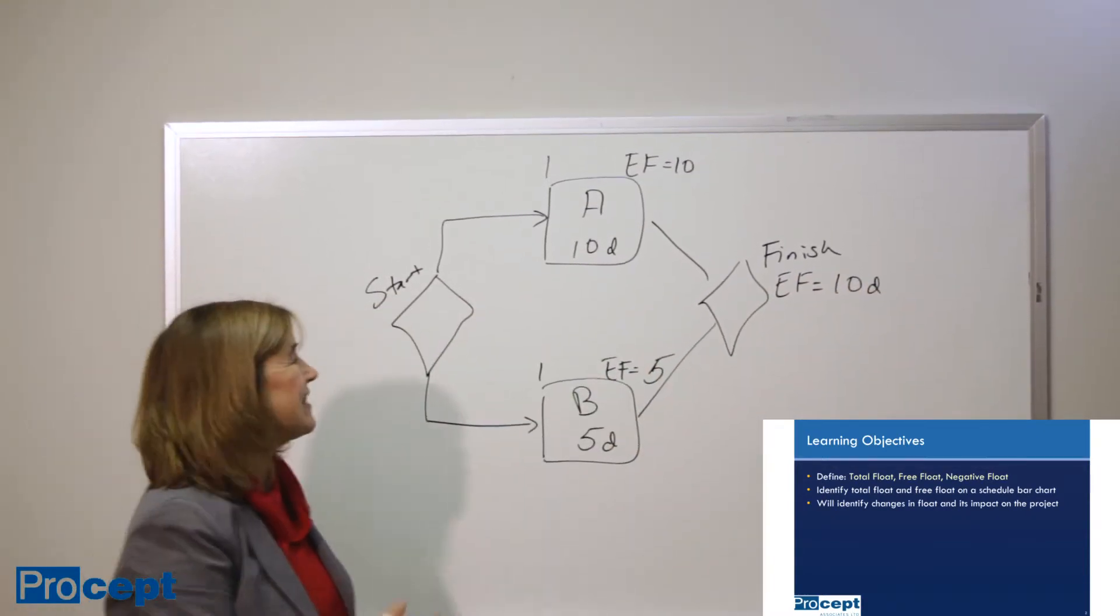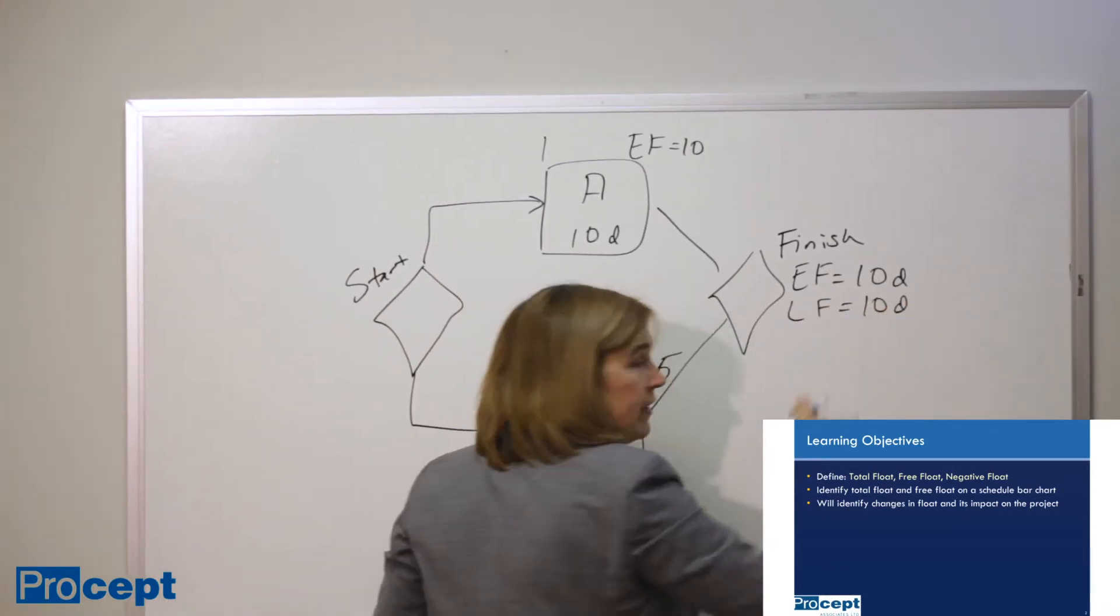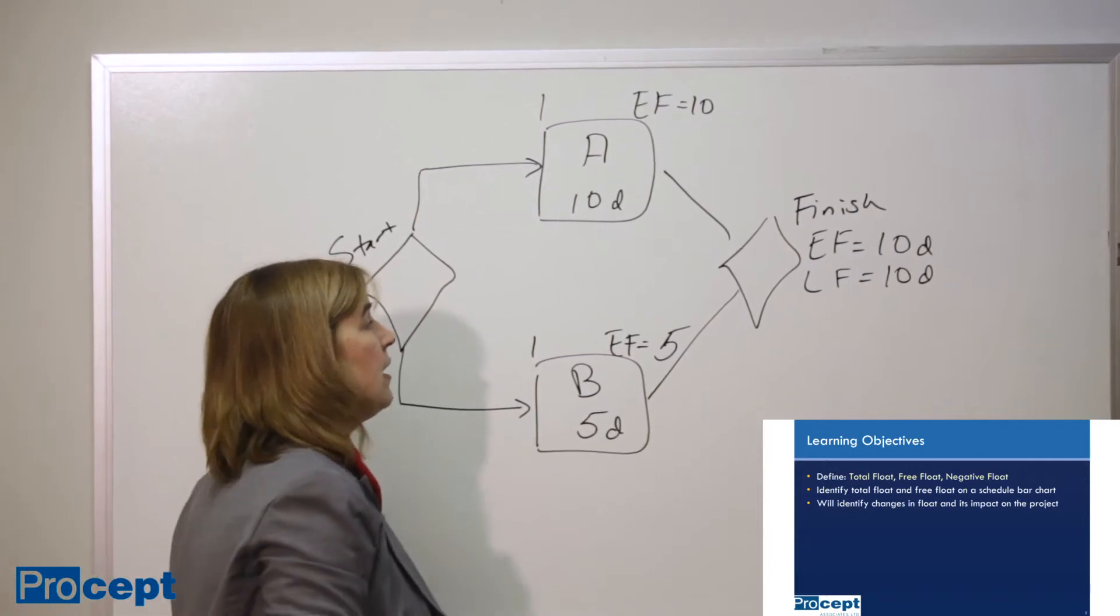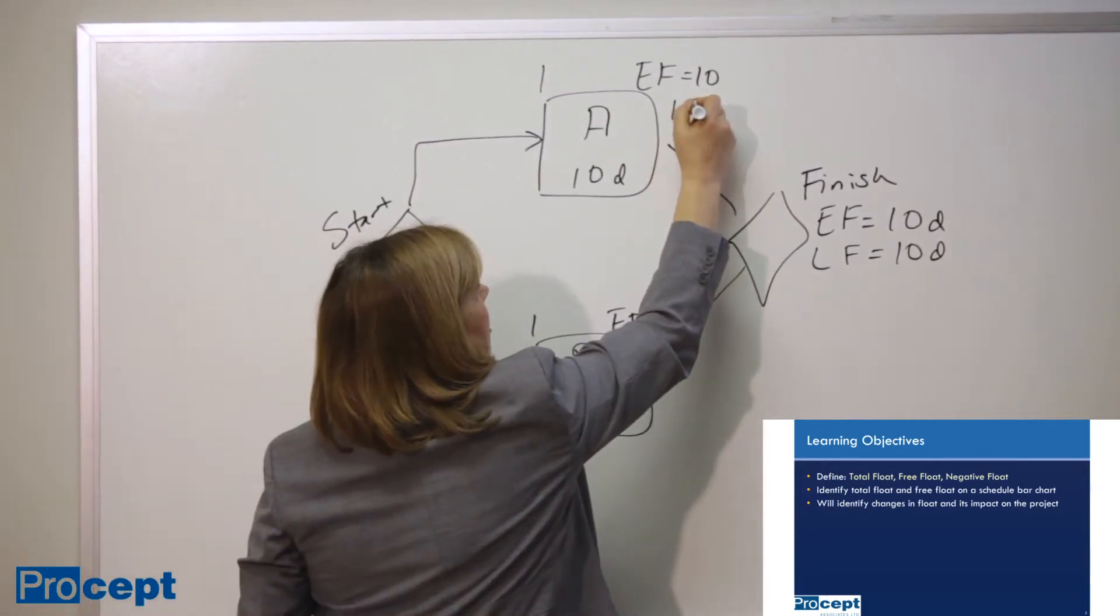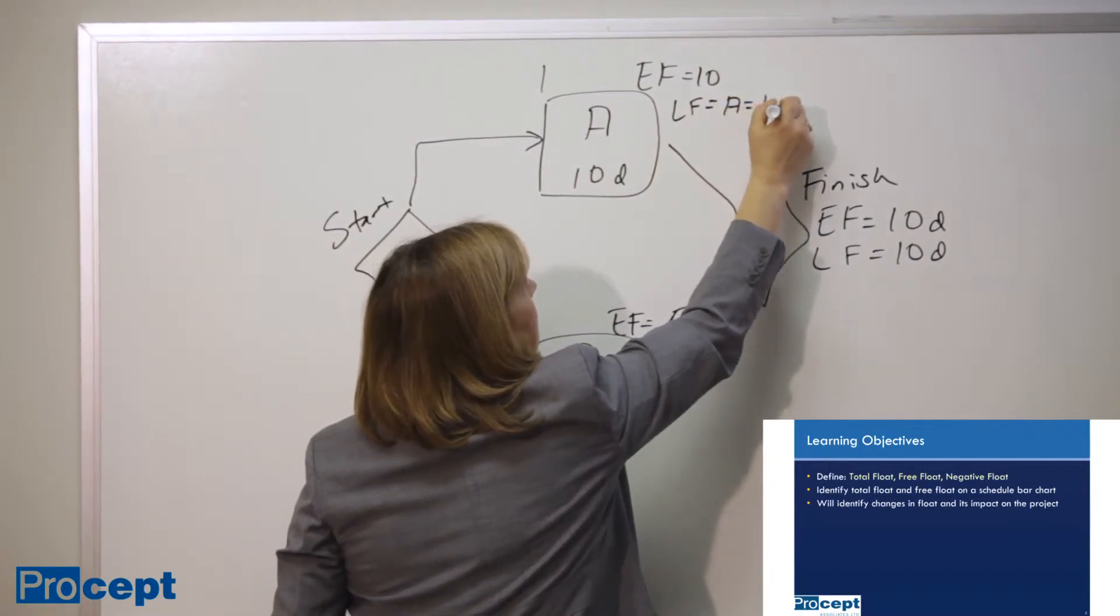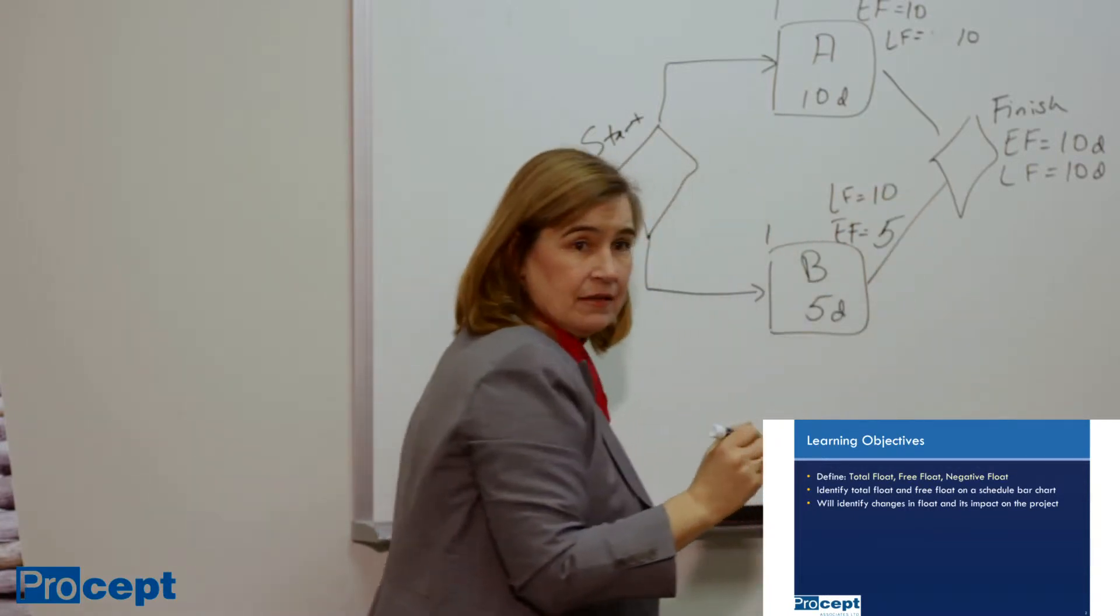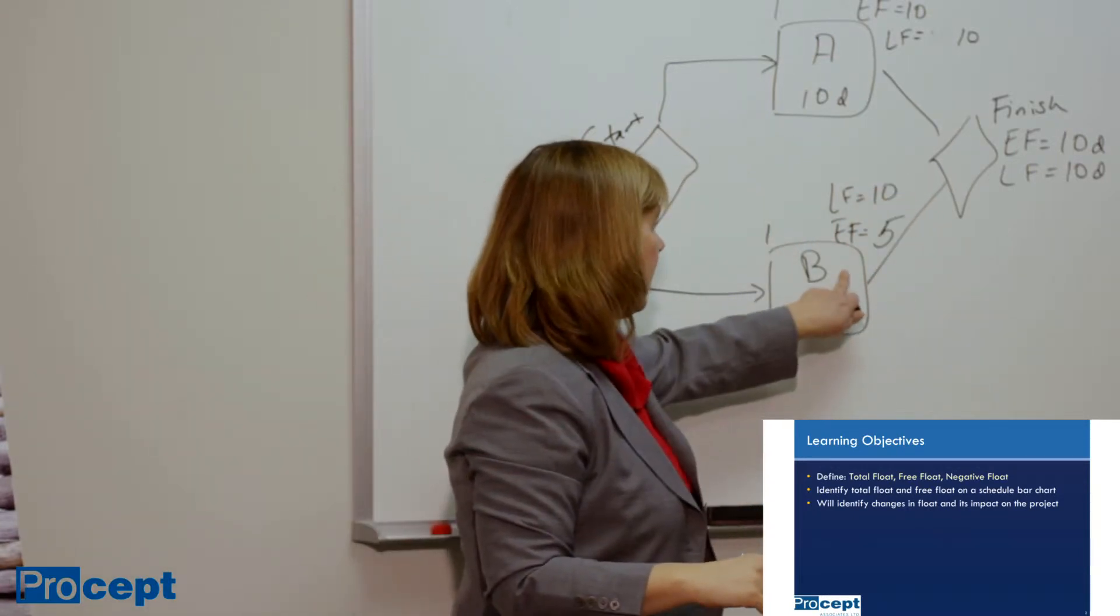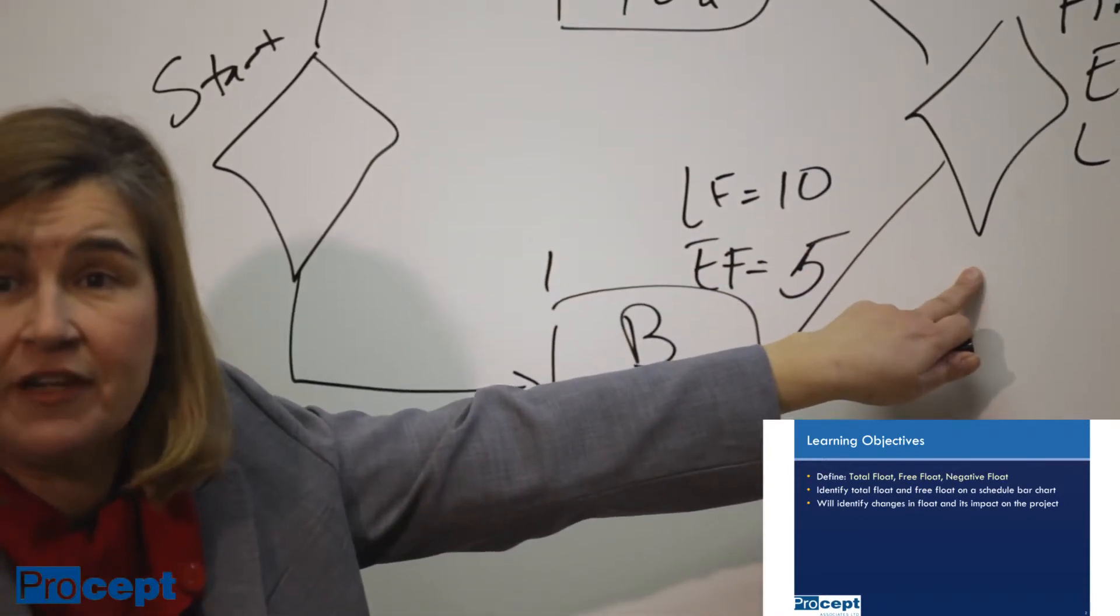Now if we work backwards, the latest possible finish time for this project is also equal to day 10 because we don't want it to slip past our promised delivery date. As a result, the latest possible finish time for A is going to be 10, and the latest possible finish time for B is also going to be 10. In other words, we can slip B by up to 5 days without affecting the project finish date.